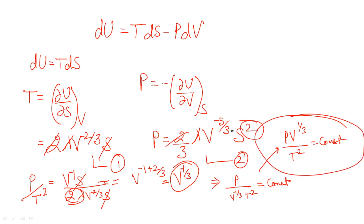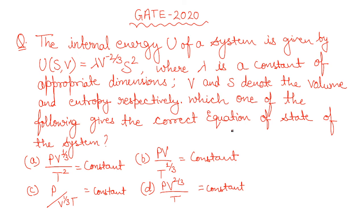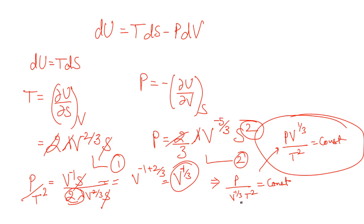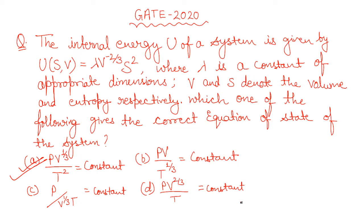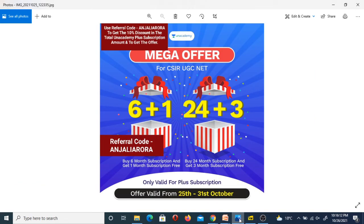So the equation of state is P V^(1/3) / T² = constant, which matches option A — that is the correct answer. This is how simply we have reached the answer. If you think in this way and take similar steps, you will get the answer for any such type of question easily without worrying about new or different question types. If you missed previous videos covering tricks and important concepts, check them out on the Mission At Physics Exam channel.